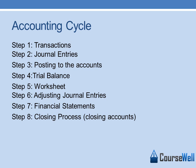Step 6 is adjusting journal entries. If you made an error or a mathematical calculation error, you would want to adjust the journal entries to make sure that your trial balance and worksheet is correct. Step 7 is to create your financial statements. Step 8 is the closing process — you would close certain accounts. Every year the revenue account will have to be closed and expense accounts need to be closed.